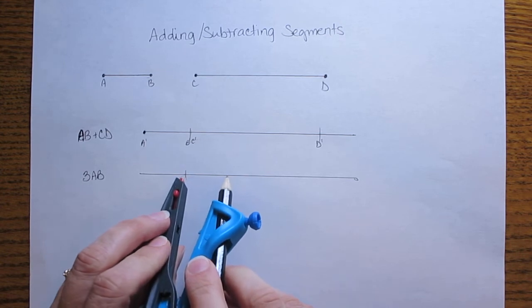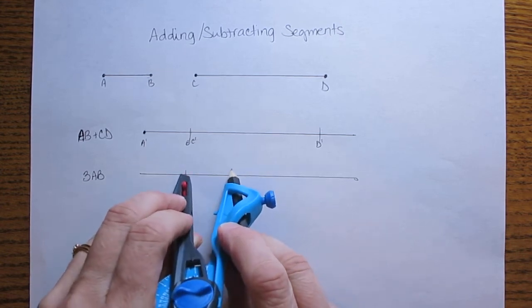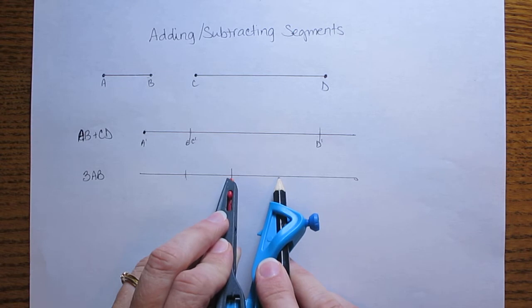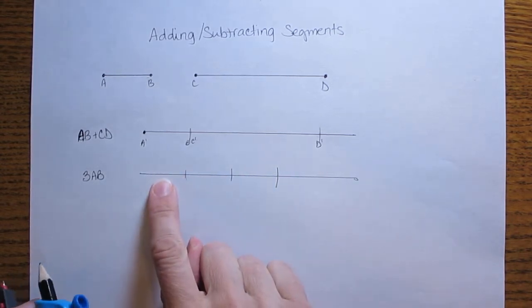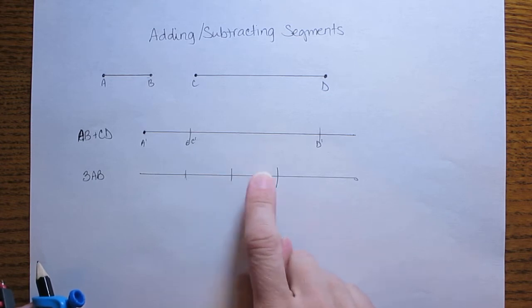Keep moving the compass down. Make another mark. Move the compass down. And make another mark. So what I have here is I have AB, another AB, another AB.